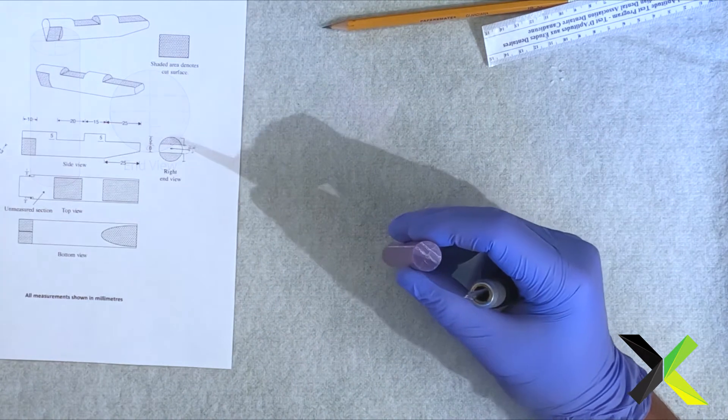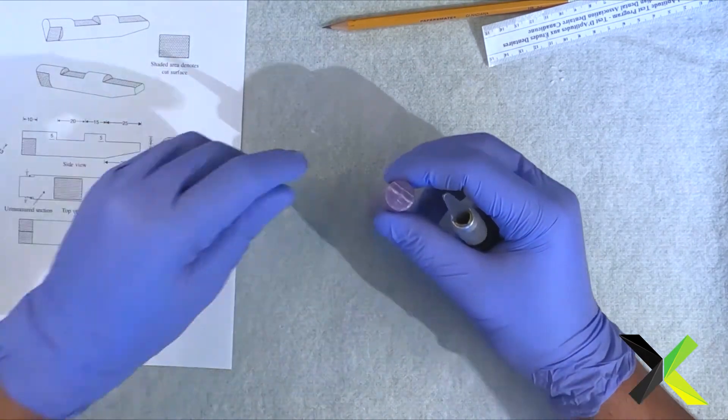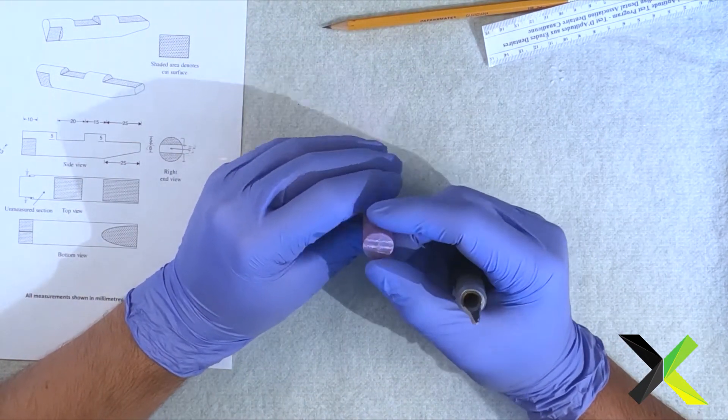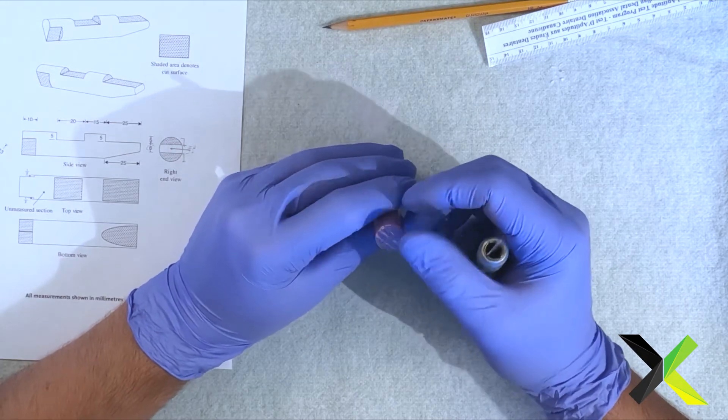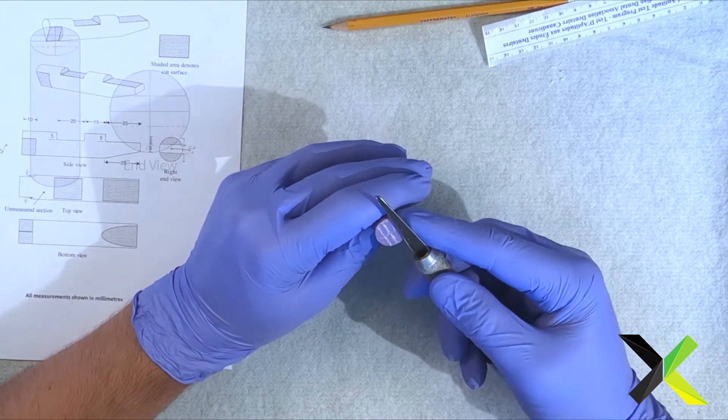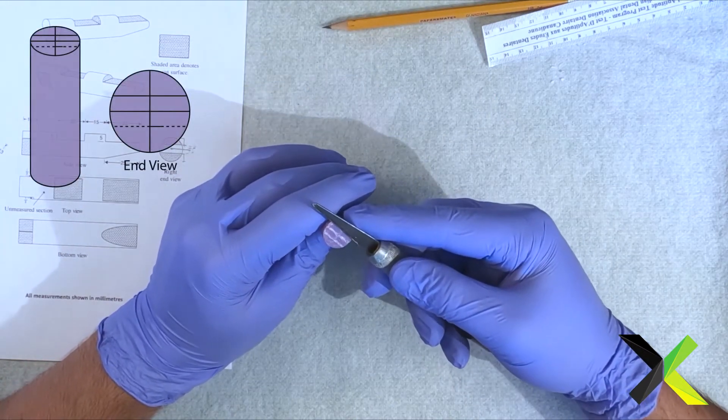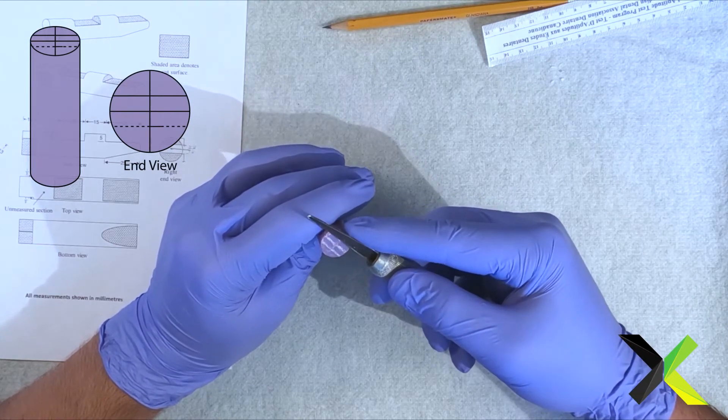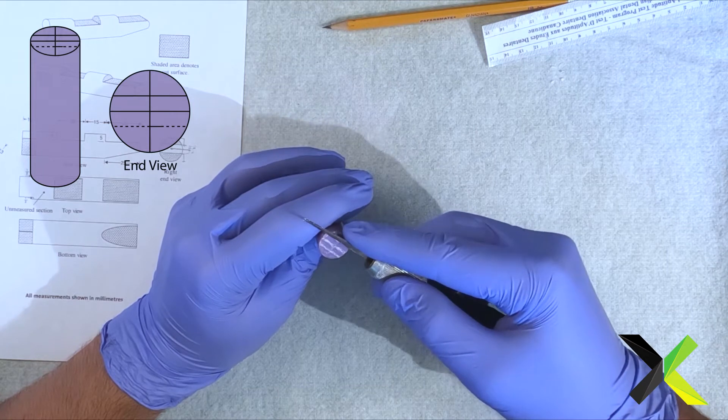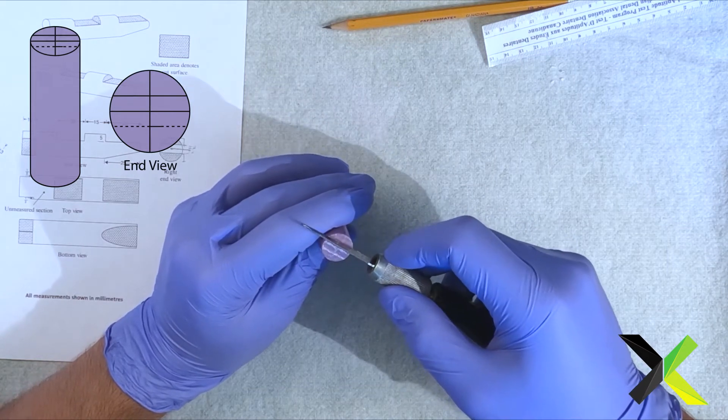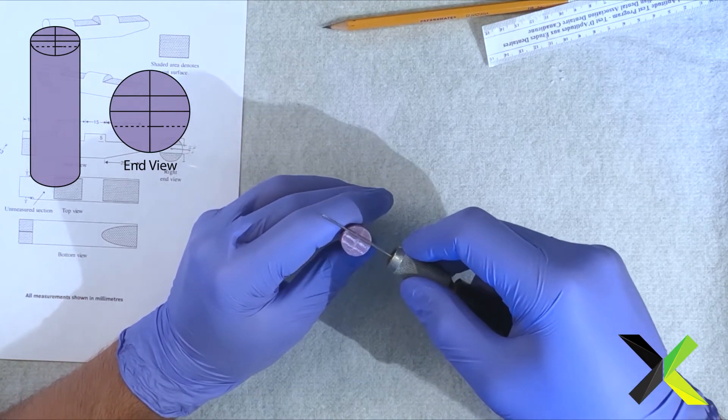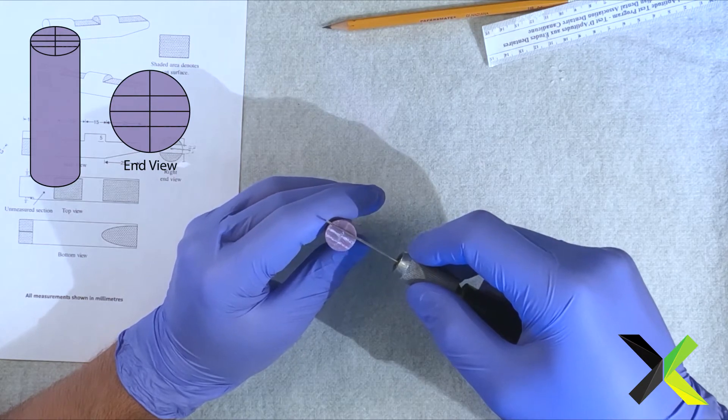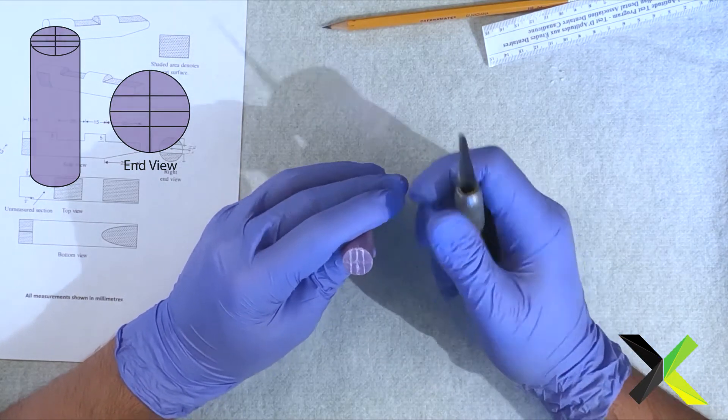All right. There we have our first upper line and then now we're going to do our lower line. So again, parallel to this reference line, up and you're going to pull across, gently.